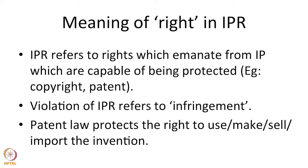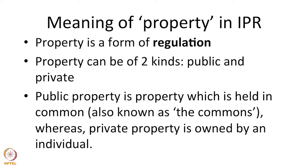When trespass happens on an intellectual property, we call that infringement. Infringement is nothing but trespass into the intellectual property owned by a person. This could relate to a set of rights that come out of the intellectual property. In the case of an invention, patent law protects the right to make, the right to use, the right to sell, the right to offer for sale, and the right to import the invention. If there is an intrusion into any of these rights vis-à-vis the invention, then we would say that there is an infringement of the intellectual property right.